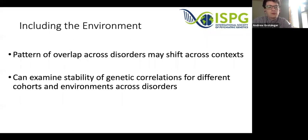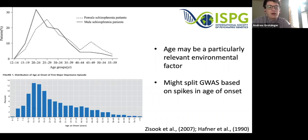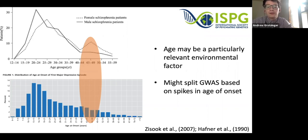Another major consideration for future cross-disorder genomic efforts is inclusion of the environment, because the pattern of overlap across disorders may shift across certain contexts. By splitting GWAS across different environments or cohorts, we can examine the stability of genetic correlations and whether certain correlations are environmentally specific. One relevant environment is age of onset, with respect to the internal biological environment at that time. Looking at distributions of age of onset for schizophrenia and major depression, there are peaks later in life that might indicate specific biology activated for genes expressed later in life, and splitting GWAS within that late-40s age bin might reveal unique clustering across disorders.